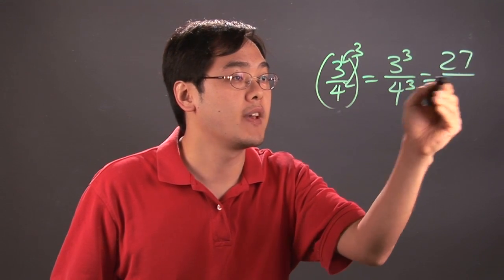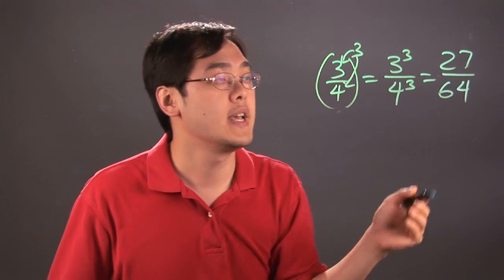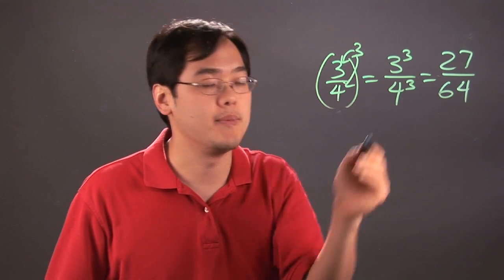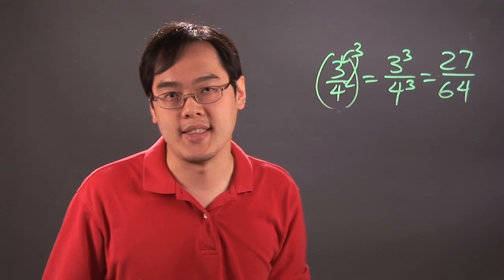3 to the third is 27, and 4 to the third is 64. Now you can reduce that if possible. I don't think it's reducible, but if you can, then do it at the very end.